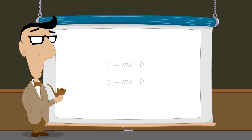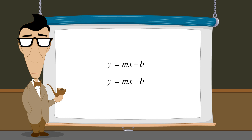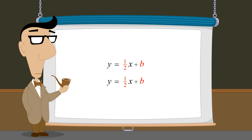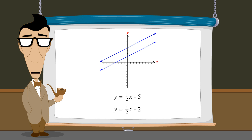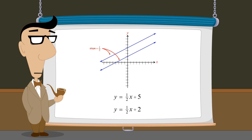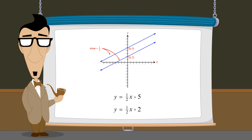It is easy to tell if two equations written in slope-intercept form describe parallel lines. If the slope m is the same in both equations and b is different, then the equations describe two lines with the same slope but which intercept the y-axis at different points — in other words, two parallel lines.